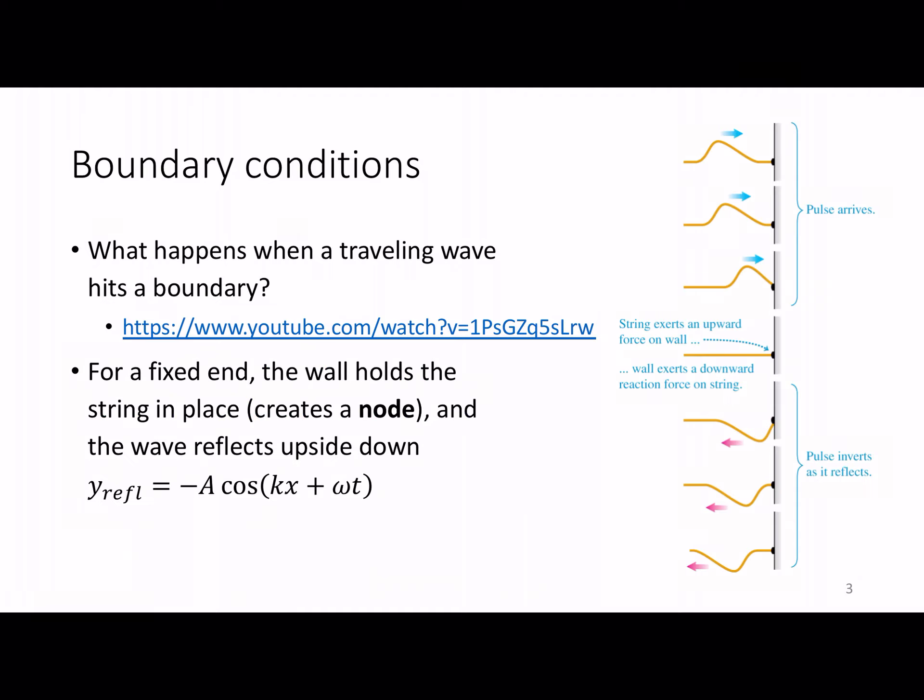That was a fixed end — the endpoint is held fixed. When the string gets there, the wall pushes it backwards, pushing the wave down, so the wave goes upside down. If the incoming wave is y = A cos(kx − ωt), positive amplitude moving to the right, the reflected wave has a negative sign out front, telling us it's going upside down, and a plus sign indicating it's moving to the left.